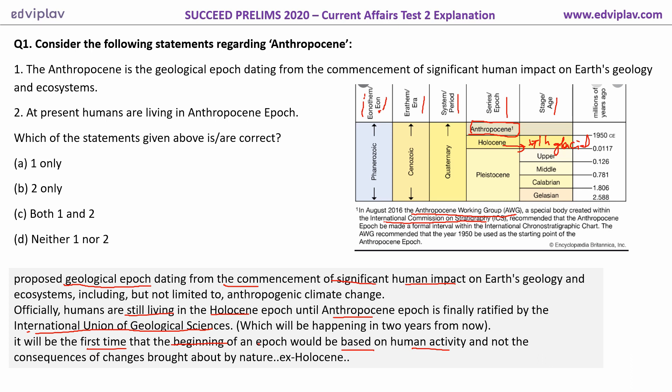Whereas Anthropocene is driven by changes brought by humans, and in that way it is significant. Now let us see the statements. Statement one: 'The Anthropocene is a geological epoch dating from the commencement of significant human impact.' That is true, and we have discussed that.